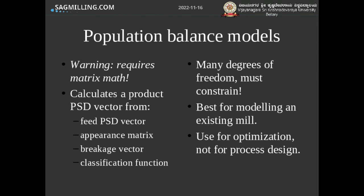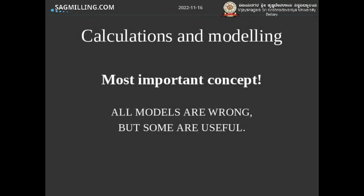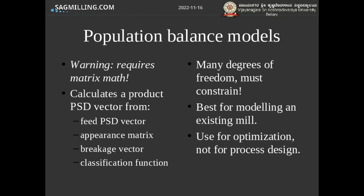These models have a lot of degrees of freedom — the matrices can be 32 by 32 rows and columns in size, and each value needs to be measured. They are best used for modeling an existing mill, where you can bring in lots of data to constrain the models. In a design setting they're much more difficult to use, because there are so many unknowns in populating the appearance matrices and breakage rate vectors, and they don't necessarily lead to one unique solution if insufficient constraints are applied.